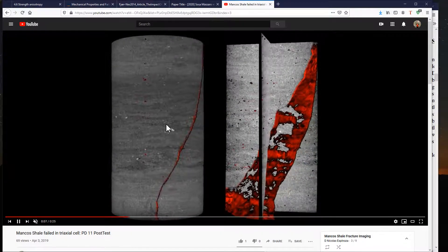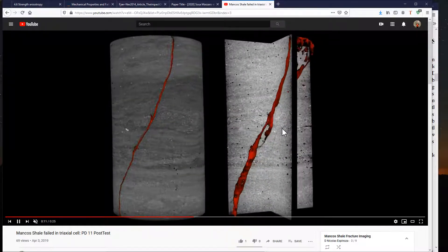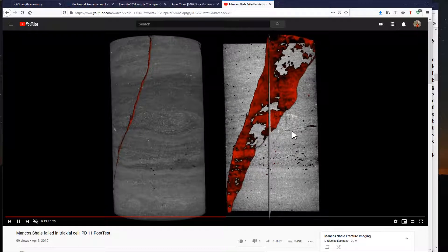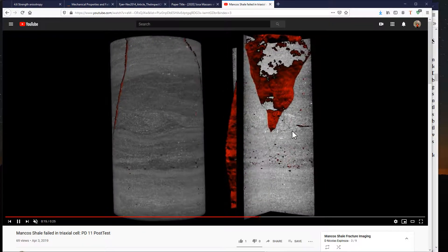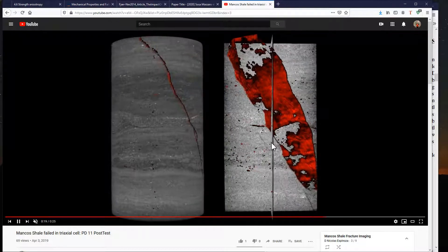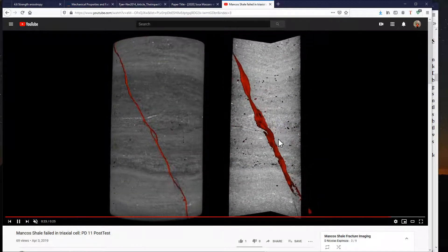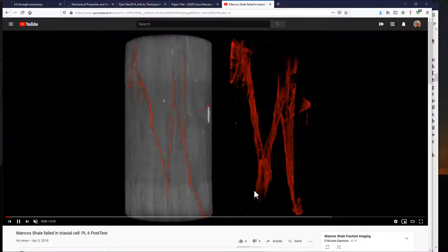For clarification, what we see over here is the outer structure of this rock, and what we see on the right is what is called a set of ortho slices. Two cross sections that go through the entire rock, and what we see in colors is the 3D shape of the fracture.